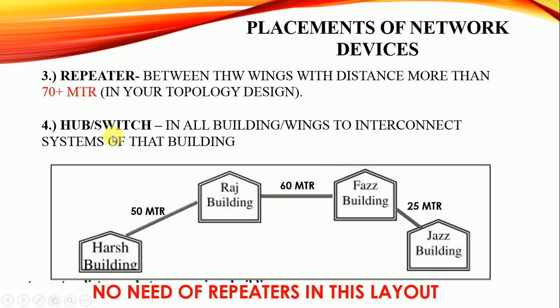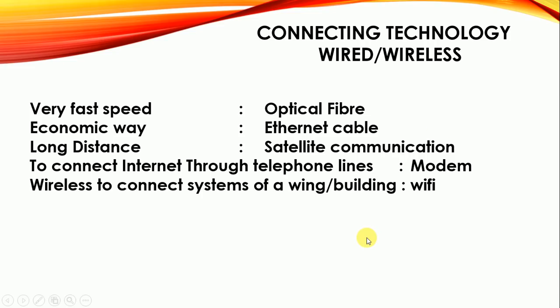A hub or switch is a device used to interconnect systems within a particular wing or building. A hub or switch will be installed in all the wings — in the Harsh building, the Large building, the Fast building, the Jazz building — essentially in every building — to interconnect the systems of that building.